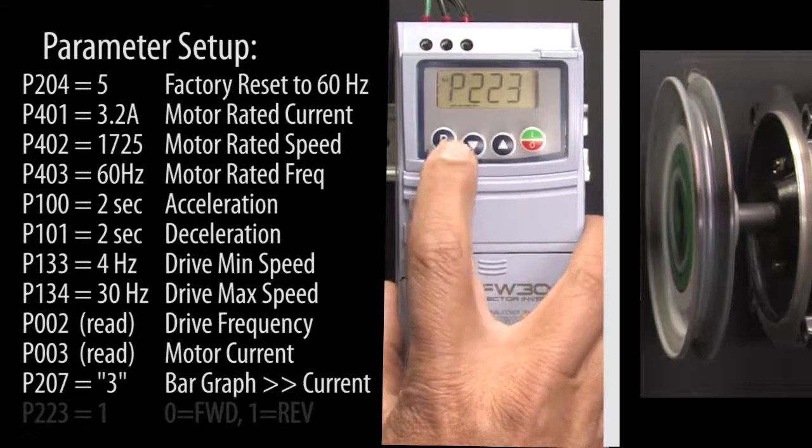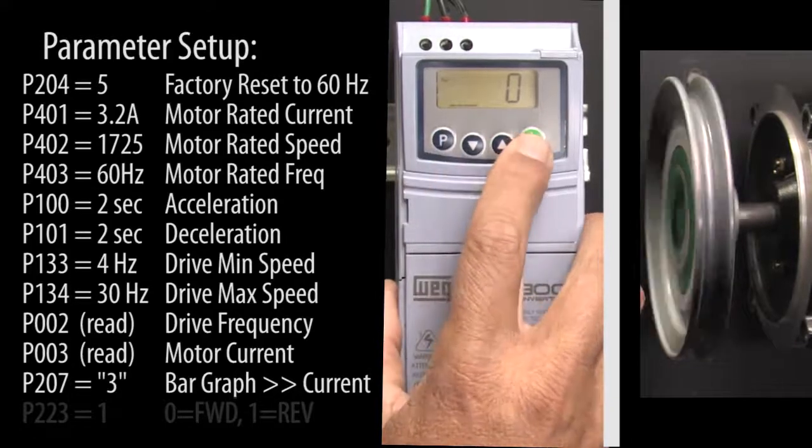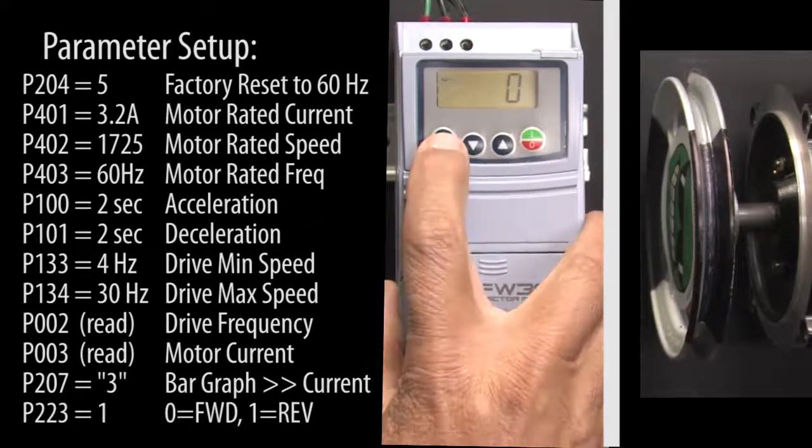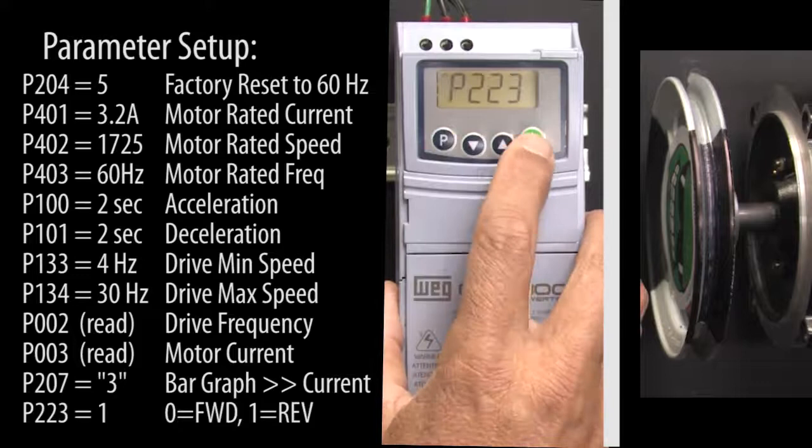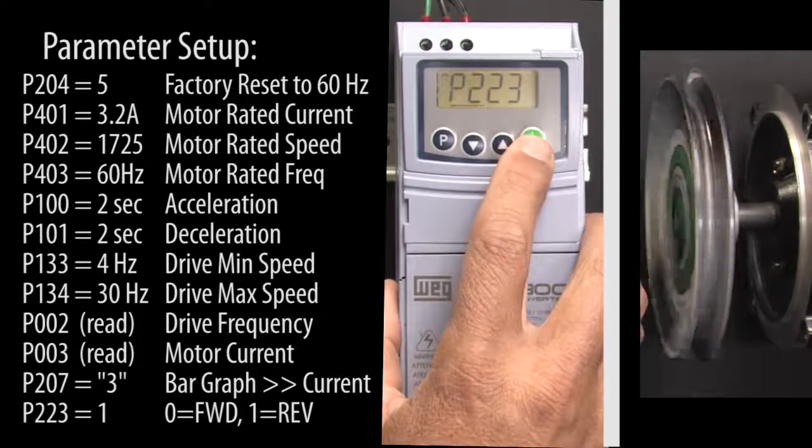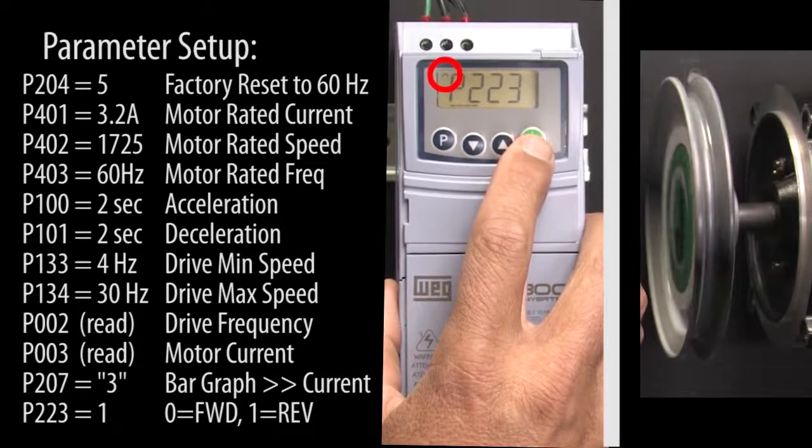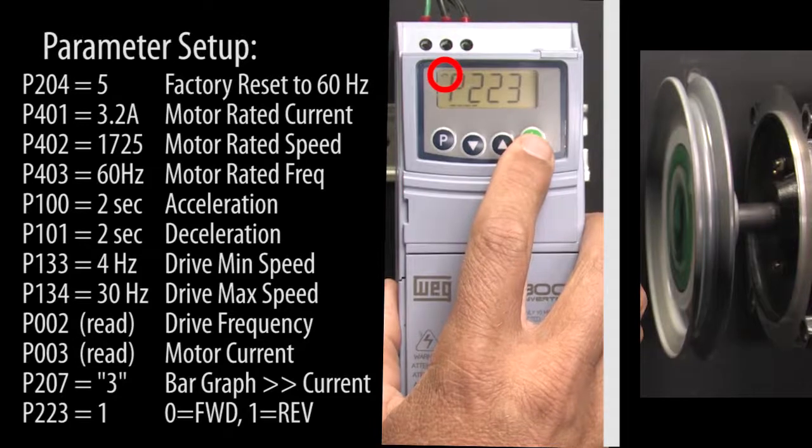Parameter 223 controls forward and reverse. Stop the motor. Change it to a 1. Hit P to accept that. And now when we run the motor, it rotates in the opposite direction and the rotation indicator up here also changes direction.